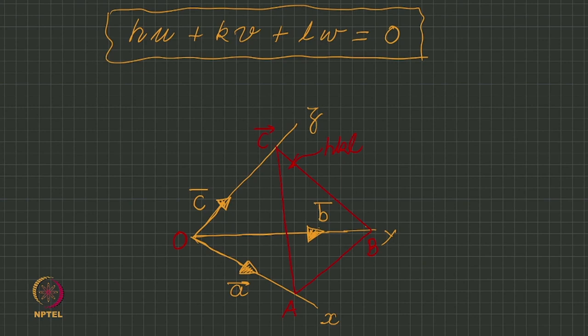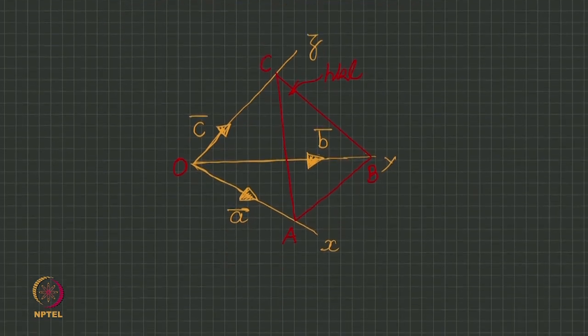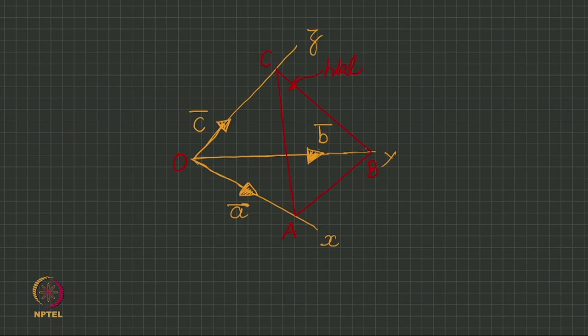We cannot use now i, j, k vectors, because that is not available to us. Because a vector is not necessarily i. So, we write OA is equal to just a by h. That is miller indices, definition of miller indices. Because the miller indices of the plane is hkl, h is the reciprocal of the intercept in terms of a.